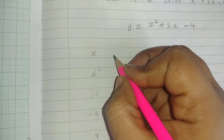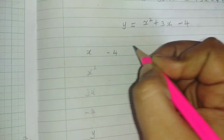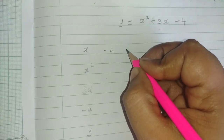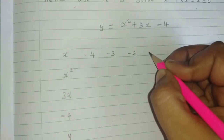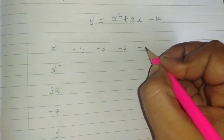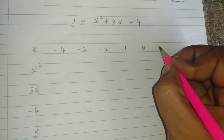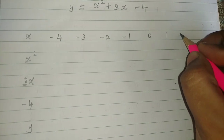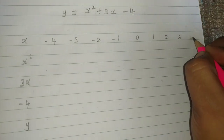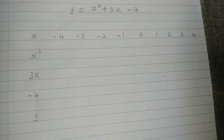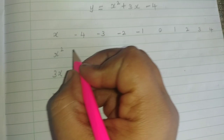The x values are: minus 4, minus 3, minus 2, minus 1, 0, 1, 2, 3, 4.